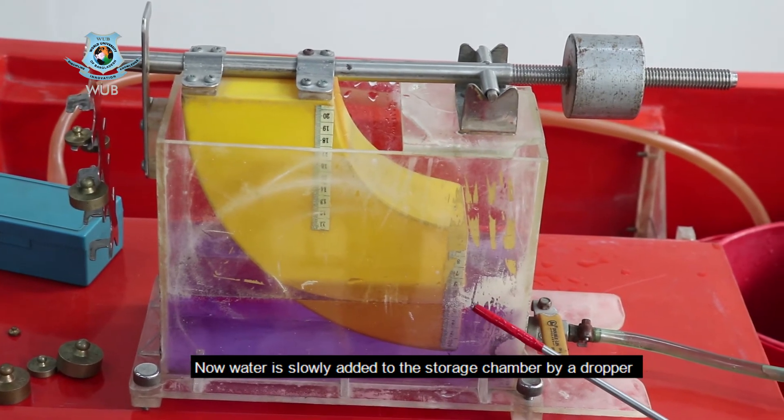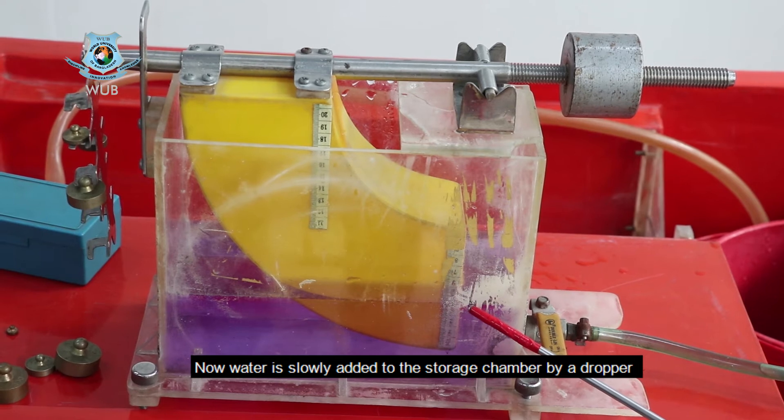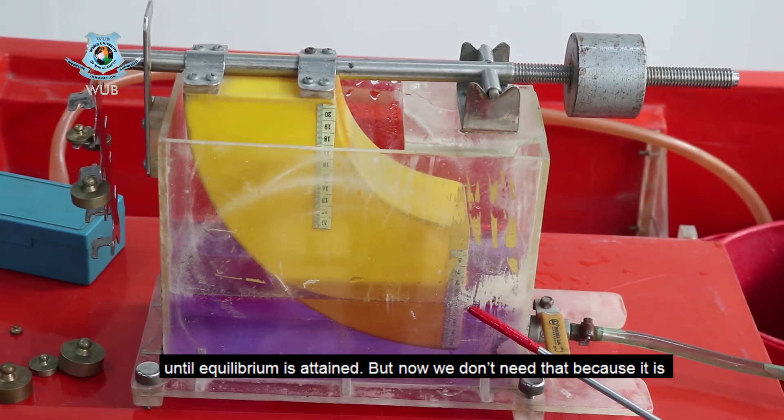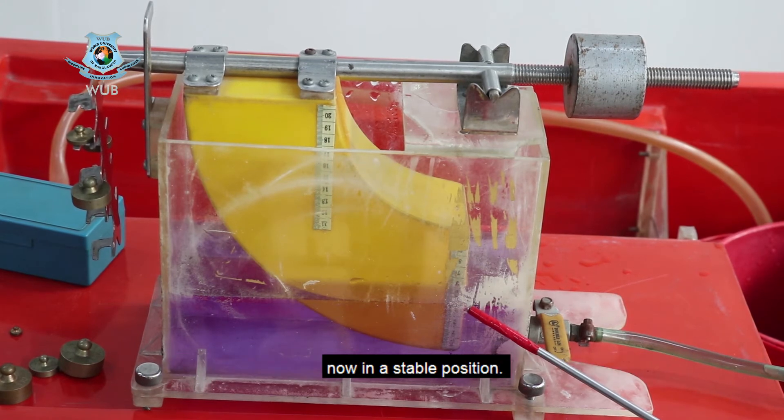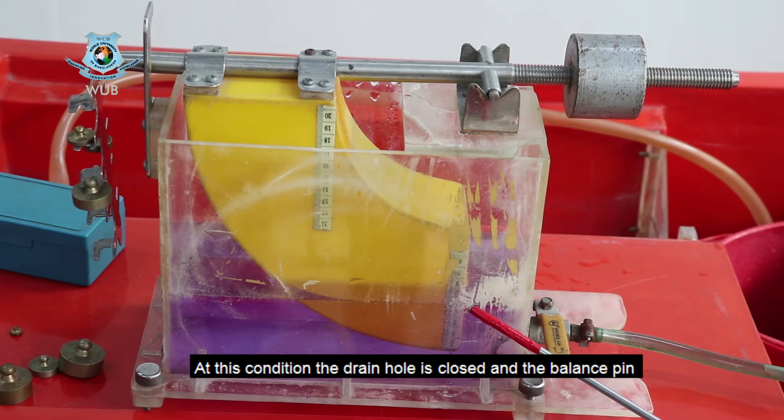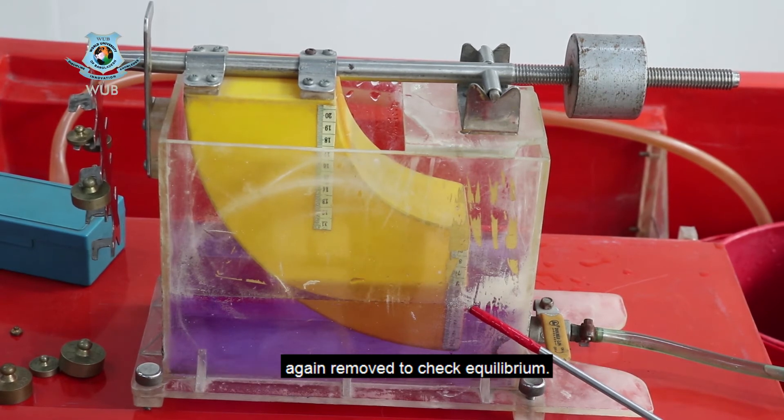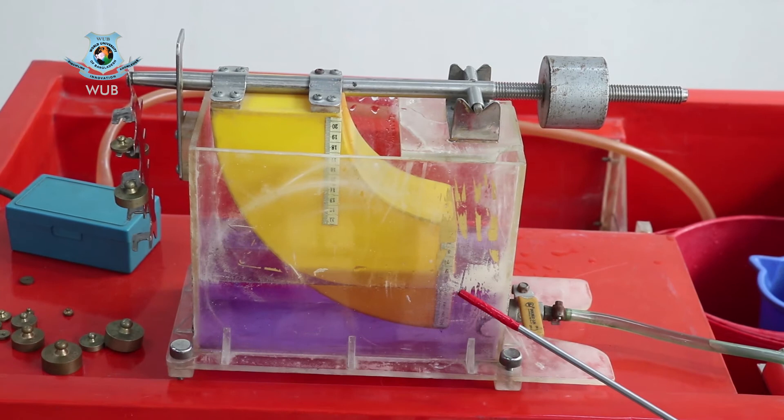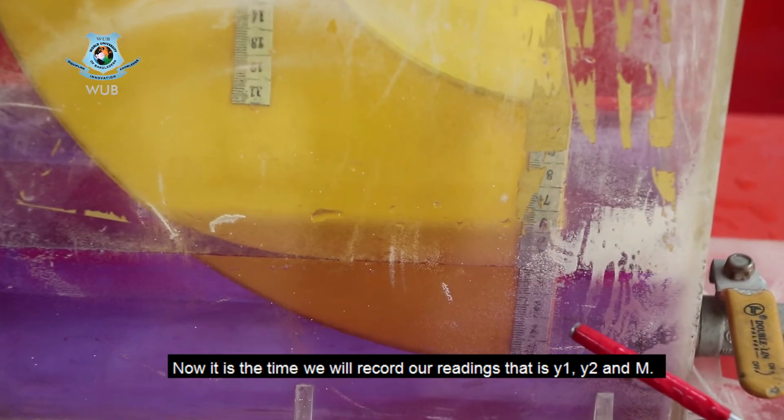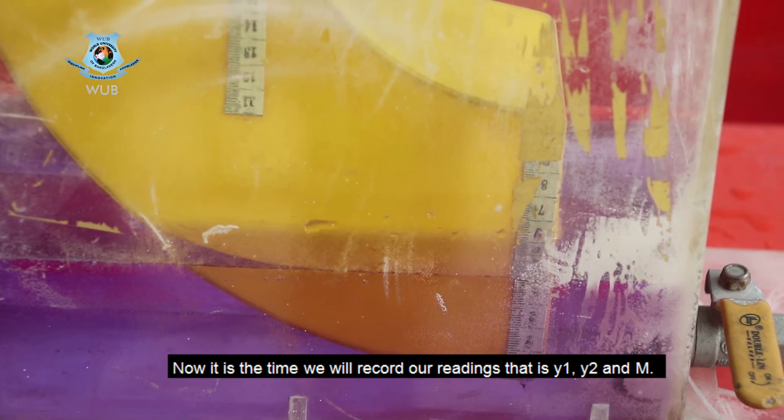Now water is slowly added to the storage chamber by a dropper until the equilibrium is attained. But now we don't need that because it is now in a stable position. At this condition, the drain hole is closed and the balance pin again removed to check the equilibrium. Now that is the time we will record our readings. That is Y1, Y2, and M.